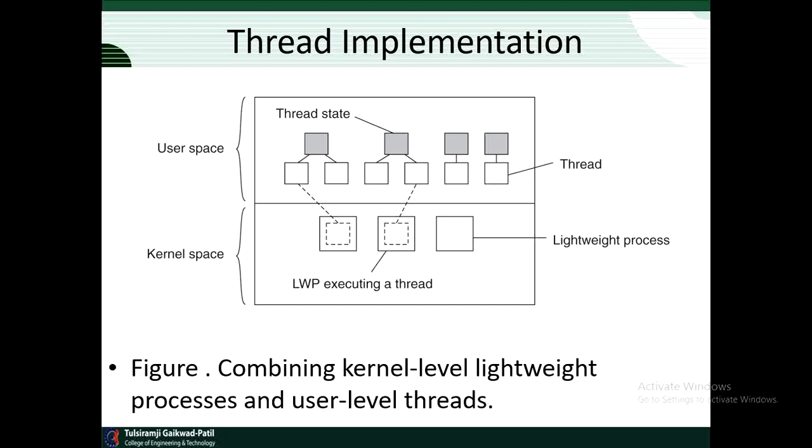A second advantage of a user-level thread is that switching thread context can often be done in just a few instructions. Basically, only the values of the CPU registers need to be stored and subsequently reloaded with the previously stored values of the thread to which it is being switched. There is no need to change memory maps, flush the TLB, do CPU accounting, and so on. Switching thread context is done when two threads need to be synchronized, for example, when entering a section of shared data.